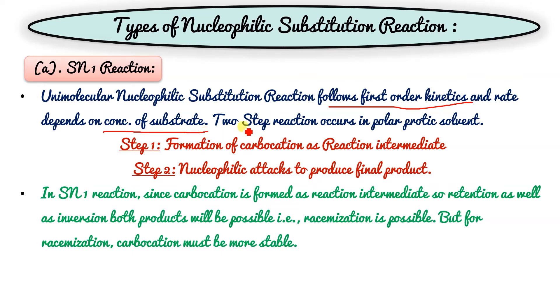SN1 occurs in two steps. The most important thing is that it occurs in a polar protic solvent. Polar means there should be an electronegativity difference, and protic means it should give an H+ ion.